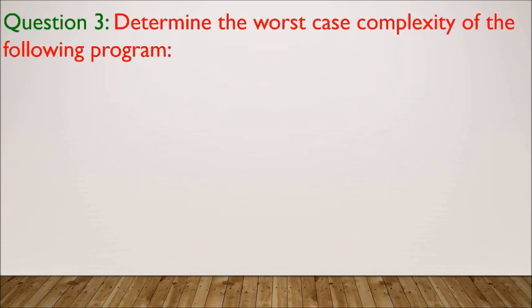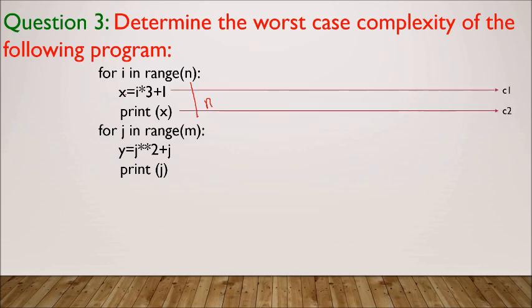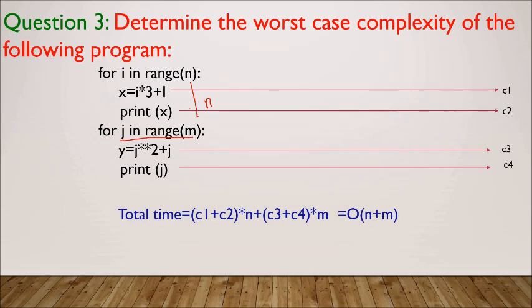The next example: determine the complexity of a program with two separate loops. The first loop executes n times — if statements inside take constant times c1 and c2, the time is n(c1 + c2). The second loop executes m times — if statements take constant times c3 and c4, the time is m(c3 + c4). Ignoring the constants, the dominant terms are n and m, giving a complexity of O(n + m). If n and m are equal, the dominant term is n, so the complexity simplifies to O(n).